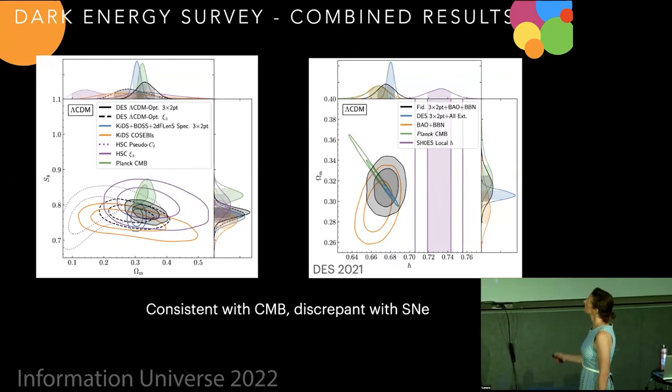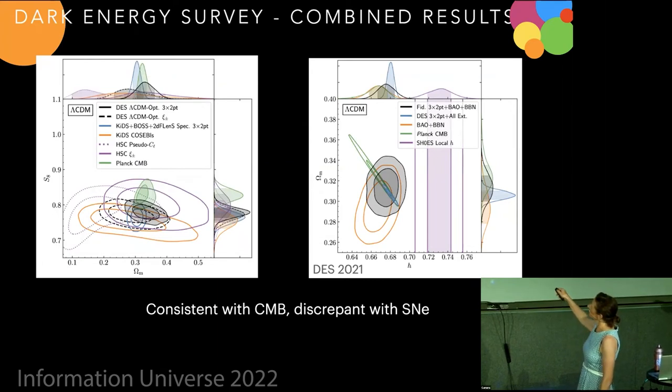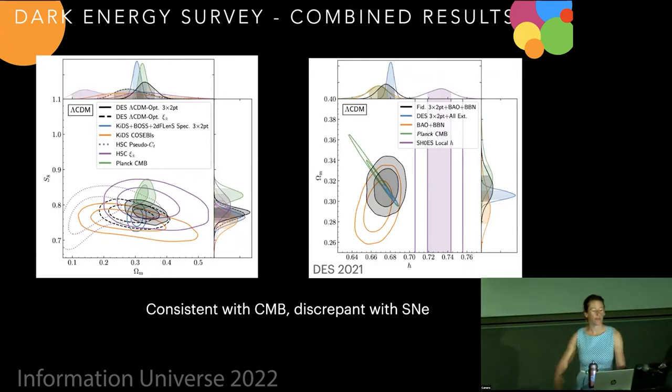And this is a measurement that was from the dark energy survey, but with a lot of other ones there. So we've heard a bunch about kids, which a bunch of people here involved in. And that's the blue one here. And Planck is the green one here. And there's one is sort of in the middle. And so our measurement is not really in tension with S8 once you take into account all the other parameters, but definitely still in tension with the Hubble constant measurement, which is this purple contour relative to the gray one there.